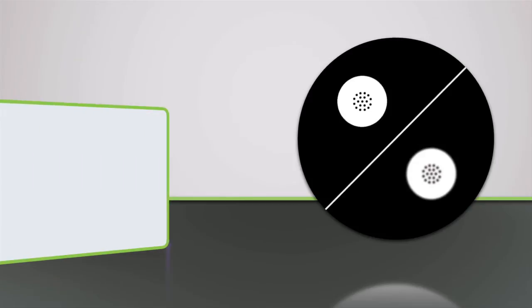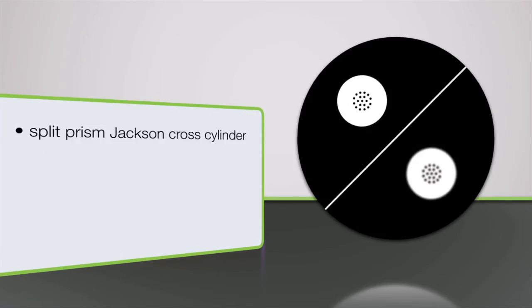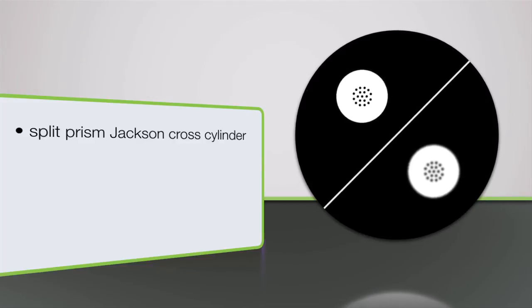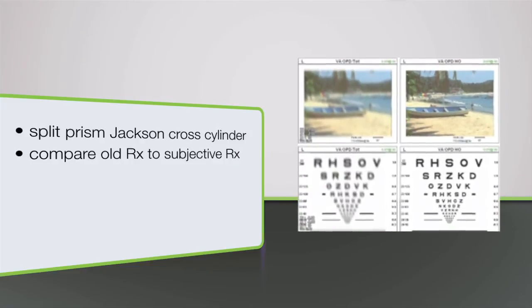Featuring a split prism Jackson cross cylinder, which translates to no longer flipping through lenses while asking patients which is better, one or two, and cuts testing time in half. Receiving a WOW factor from your patients when with a touch of a button shows them their old prescription compared to their new prescription.